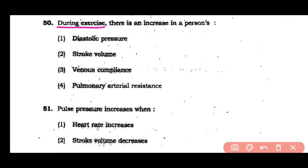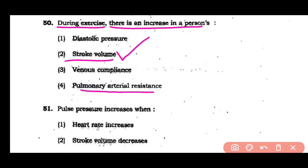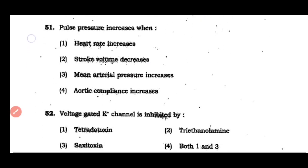Question number 50: During exercise, there is an increase in a person's diastolic pressure, stroke volume, venous compliance, or pulmonary arterial resistance. The correct answer is option 2 — during exercise, a person's stroke volume increases.